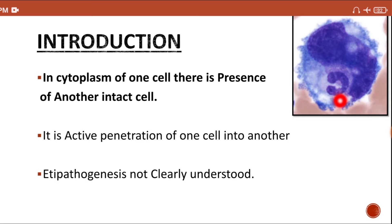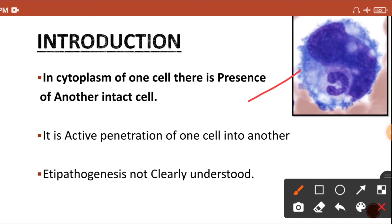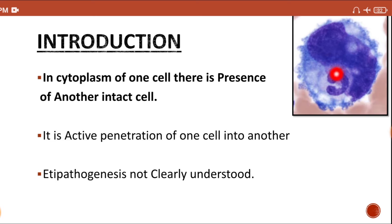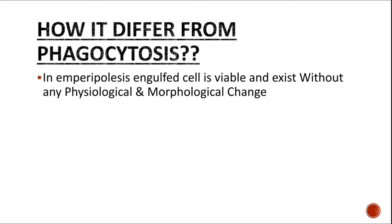Emperipolysis means the active penetration of one cell into another cell, and the etiopathogenesis for emperipolysis is not clearly understood. In this diagram you can see a large cell — this is the megakaryocyte. You can see certain cytoplasmic blebs; the future platelets will be produced from these cytoplasmic protrusions. Here, the megakaryocyte has engulfed a neutrophil, which is an example of emperipolysis.